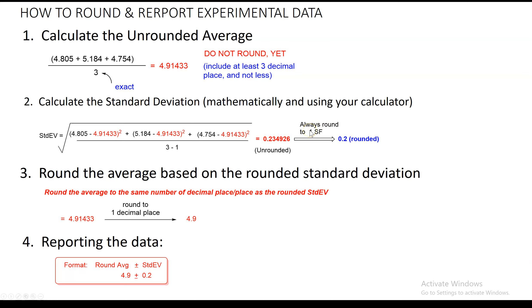Once we have the standard deviation, we always round it to one significant figure. In this example, when rounded to one significant figure it becomes 0.2. The reason we always round to one significant figure is because of its meaning: it tells us how much the average value can deviate. If the average can deviate at the first decimal place, then the certainty in later decimal places doesn't matter — they are overridden and become insignificant. So that is why we always round the standard deviation to one significant figure.